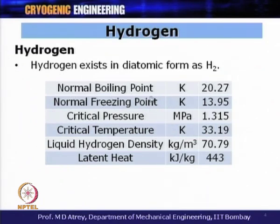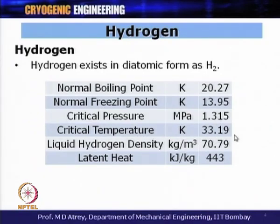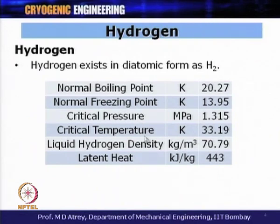The properties of hydrogen include: a normal boiling point of 20.27 Kelvin at 1 bar, a normal freezing point of 13.95 Kelvin, a critical pressure of 1.315 MPa (around 13 bar), and a critical temperature of 33.19 Kelvin. It has a density of 70.79 kg/m³ and a latent heat of 443 kJ/kg for gas-to-liquid or liquid-to-gas conversion.